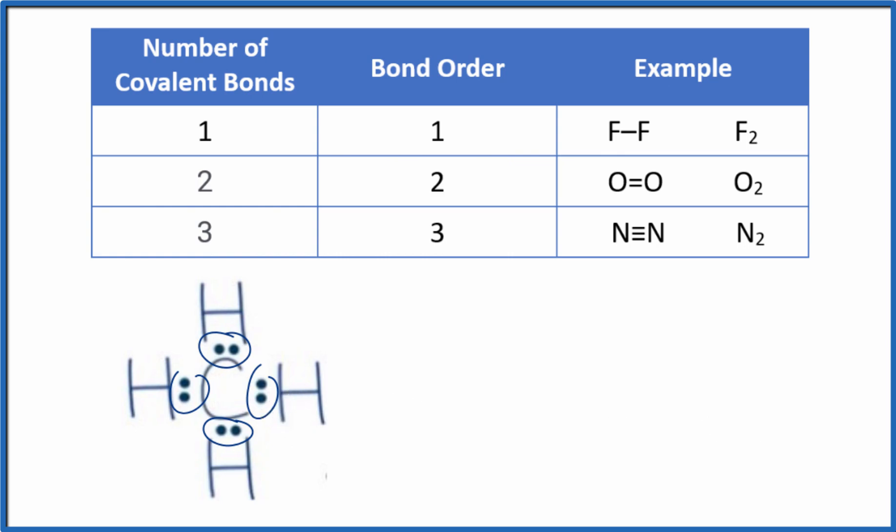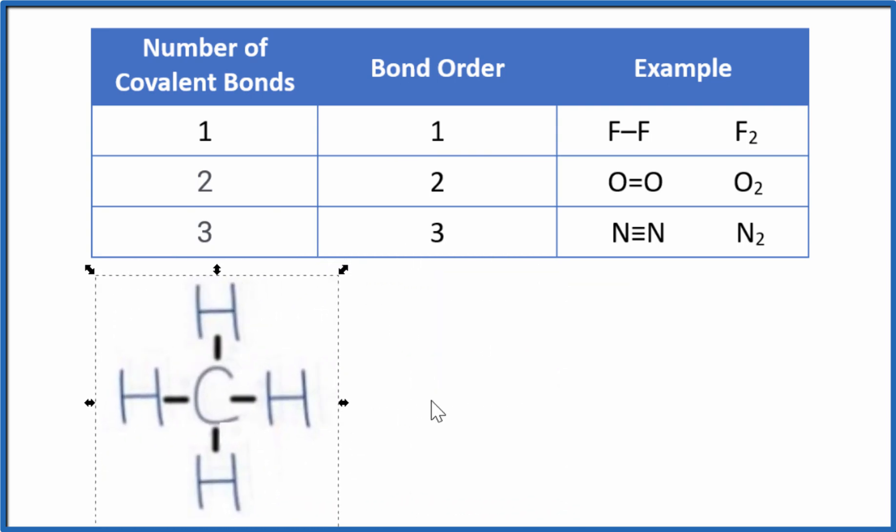You could also write it like this, where the shared pair of electrons is just written as a line. So let's do that. So to find the bond order, the bond order for each one of these single bonds, we have one bond. The bond order is one. So for each one of these bonds, we could say the bond order is one.